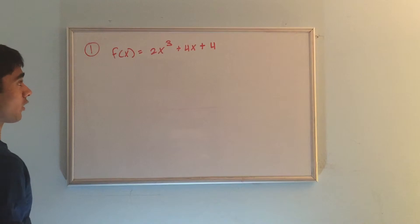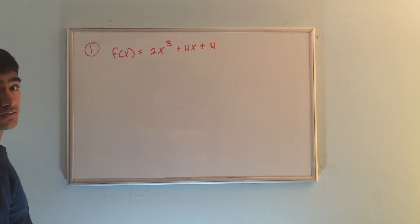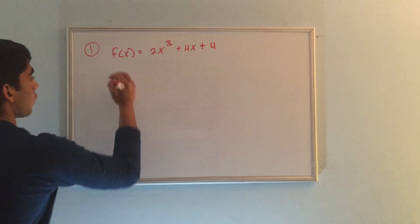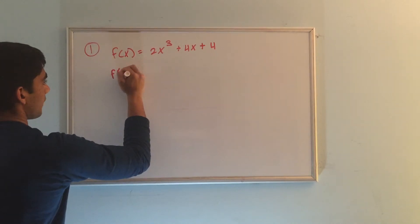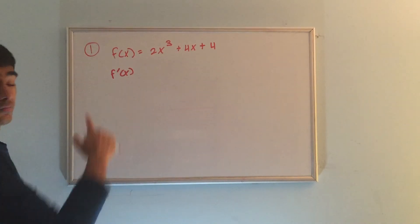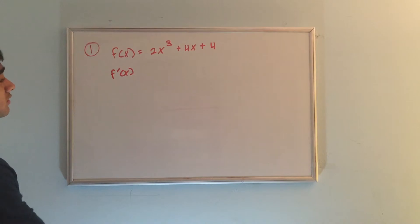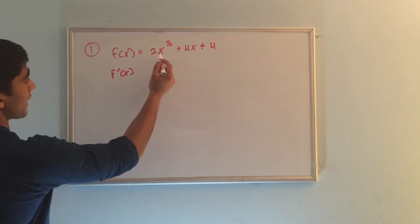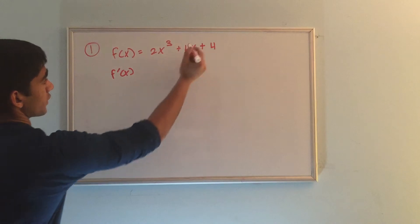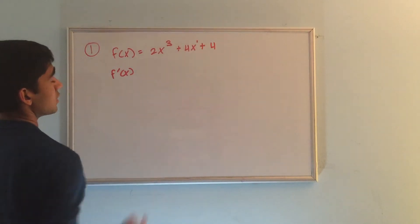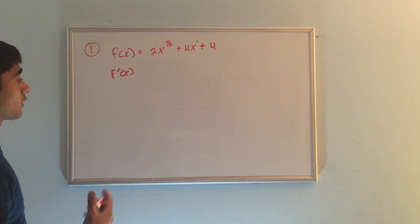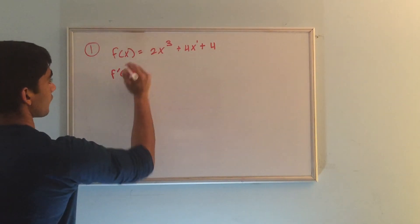So our first problem is: f of x equals 2x cubed plus 4x plus 4. What we want to find is f prime x, or the derivative of f of x. Notice that when we look at this function, we see that there's a base x raised to a constant number here and here — this exponent can be 1. The first thing I think of when I see a base raised to a constant number is the power rule, so let's do that.